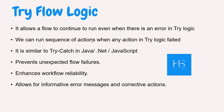We can now run a sequence of actions when any action fails in the try logic. It is similar to try-catch in Java, .NET, or JavaScript. If you know the basics of those languages, you would know the try and catch block — if anything fails in the try block, execution jumps to the catch block and it handles the error gracefully. This prevents unexpected flow failures and enhances workflow reliability, making your Flow Designer more stable.